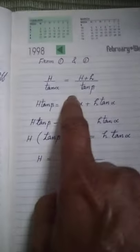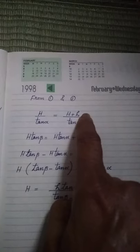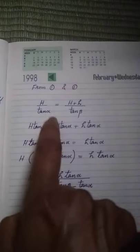H upon tan alpha is equal to H plus small h upon tan beta. Now we will cross multiply.